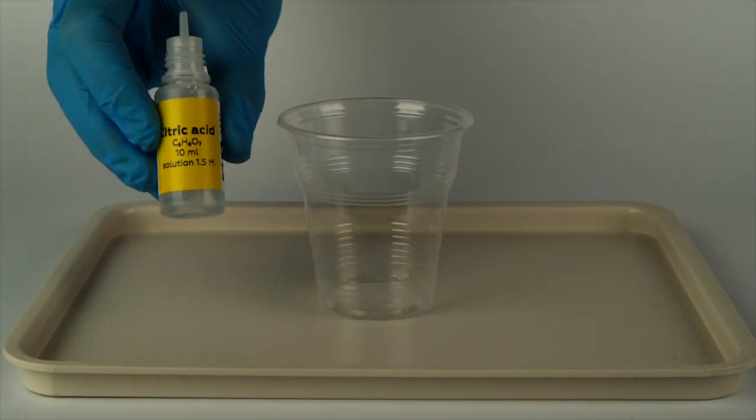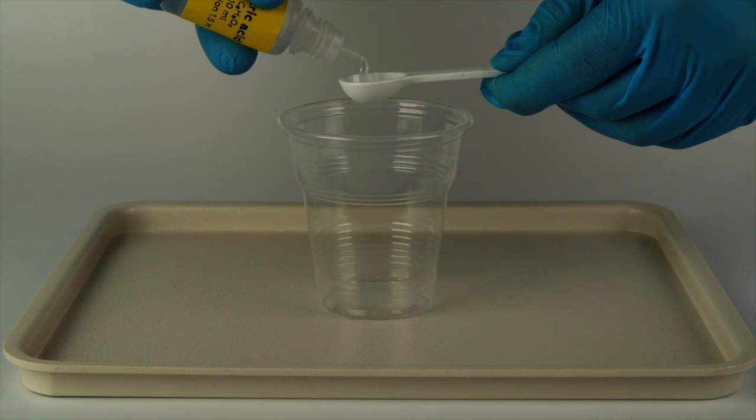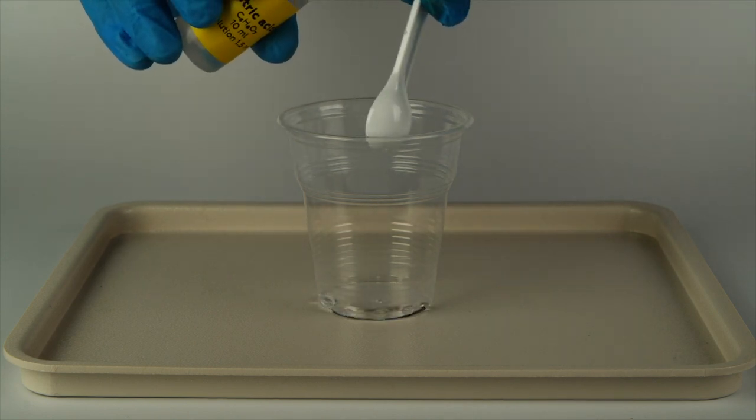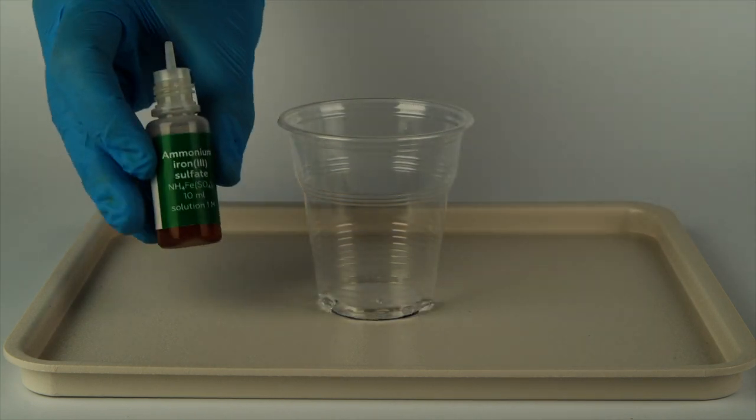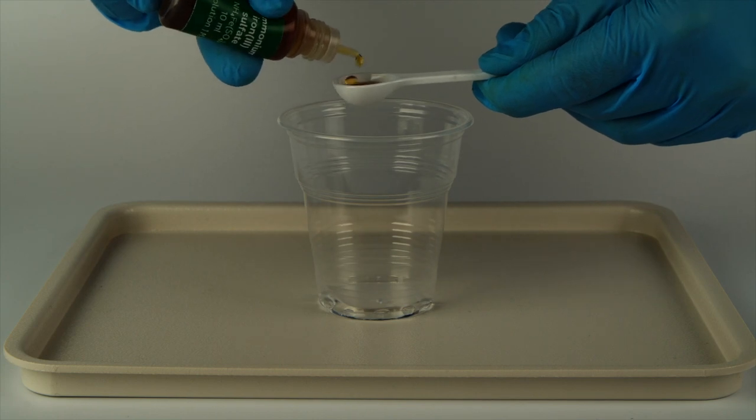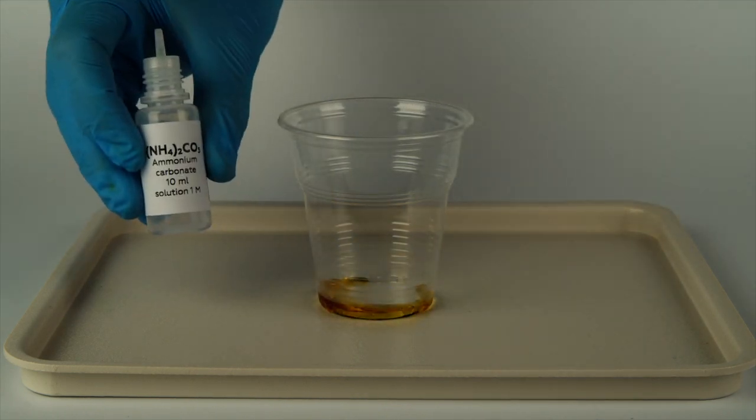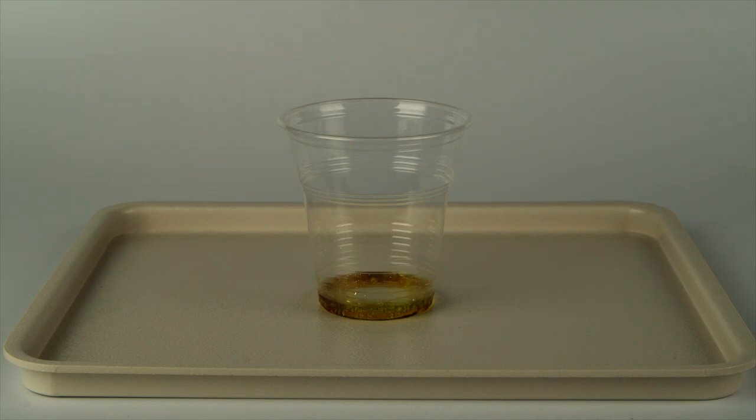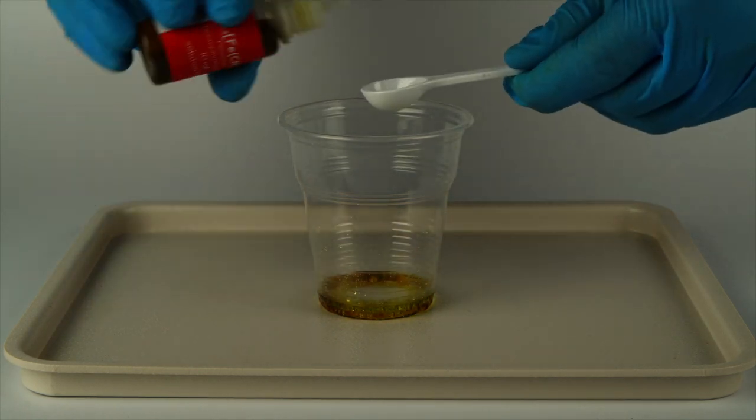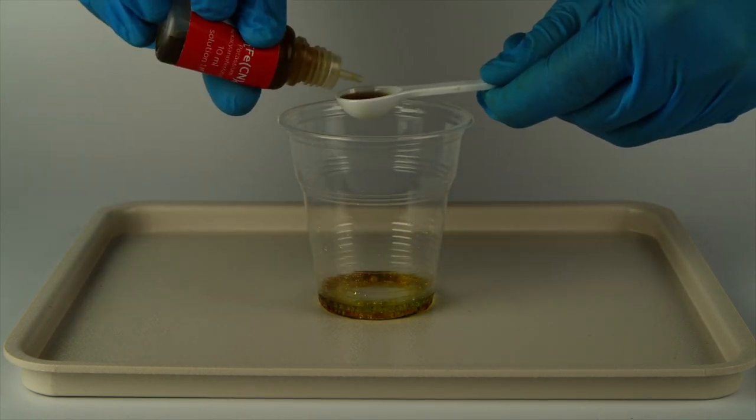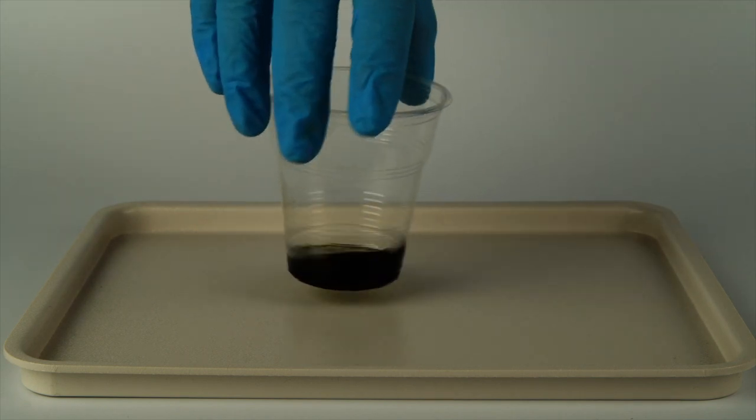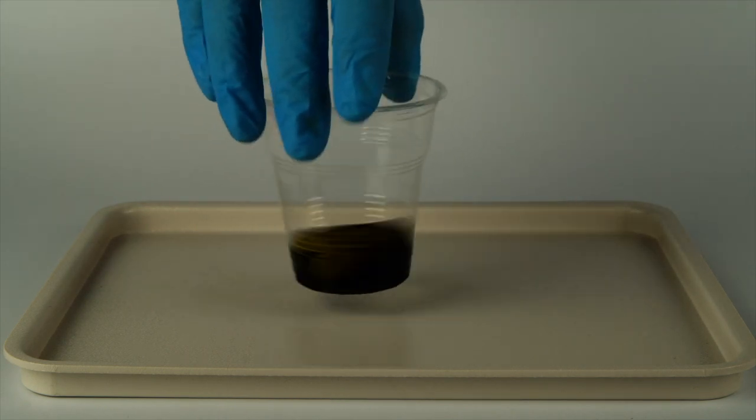First, prepare your light-sensitive mixture. Measure one big spoon of citric acid solution into a disposable cup. Add one big spoon of ammonium iron sulfate solution. Add one big spoon of ammonium carbonate solution. Lastly, add one big spoon of potassium hexocyanopherate solution. Mix the contents of the cup by swirling them around.